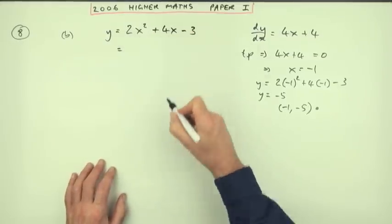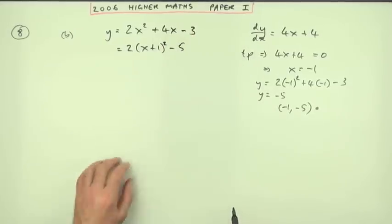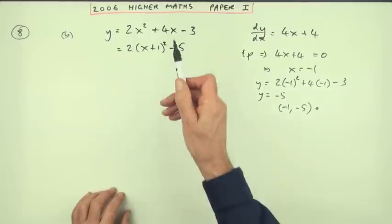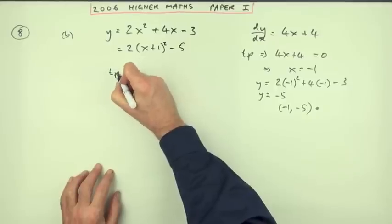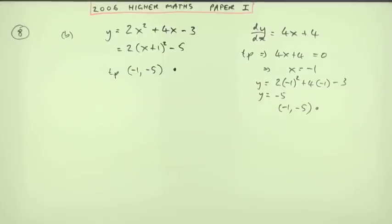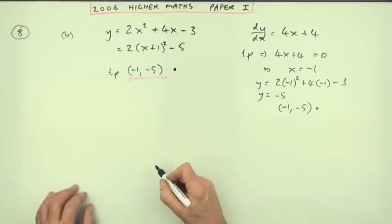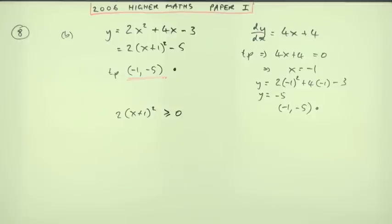It is Part B so it must be related to Part A. In Part A you had the completed square form: 2(x plus 1) squared minus 5. You probably remember from doing parabolas that the turning point comes from these two numbers — it's the negative of the first and the same as the second. So straight away the turning point is (negative one, negative five), done in one go. If the question had asked for a reason, the reason is that a square can never be negative — so 2(x plus 1) squared is always greater than or equal to zero.